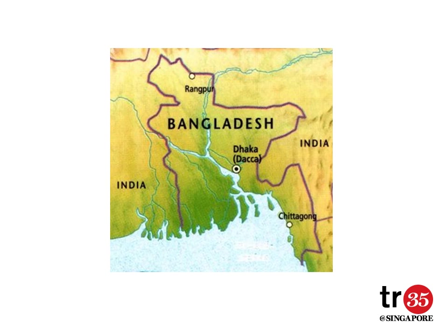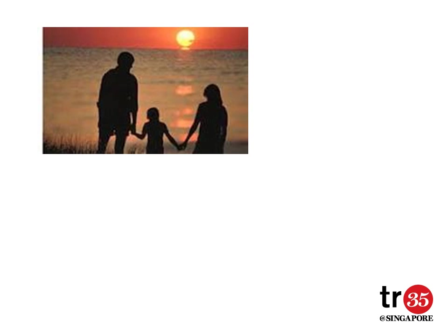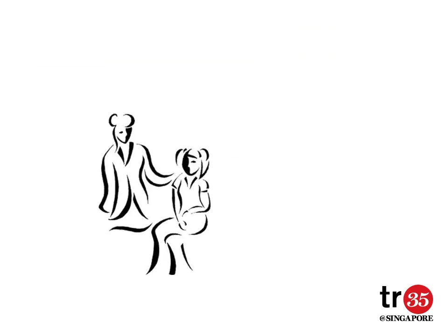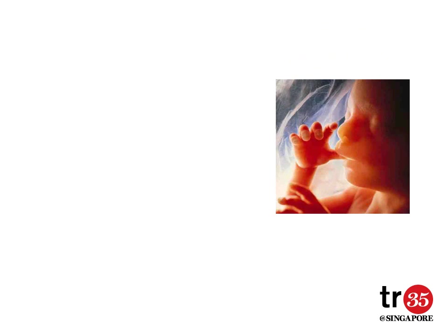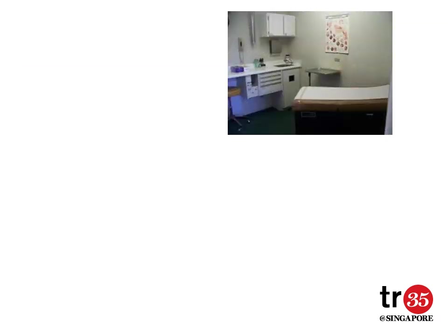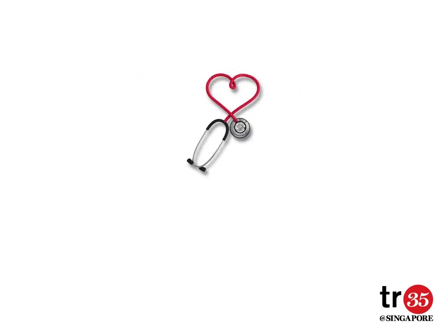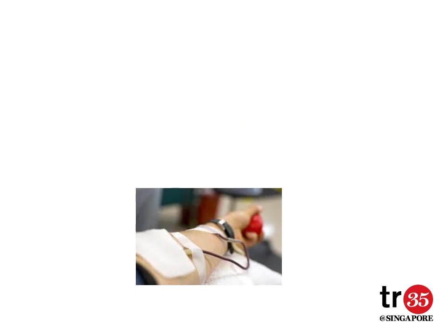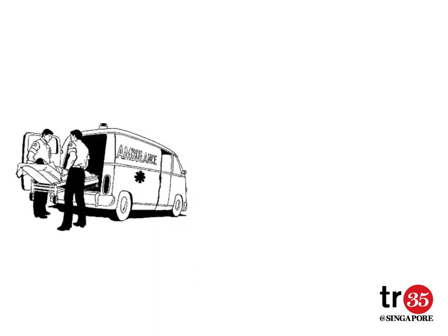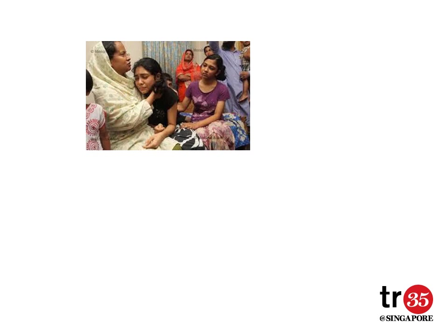One of my distant female relatives lived in the remote part of Dhaka. She was educated and living happily with her husband and a daughter. They were expecting another baby. At the time of labor, she went to a nearby clinic, which had limited facilities. She gave birth to a baby girl. But unfortunately, her situation got complicated after the delivery and the duty doctor suggested immediate blood transfusion. The clinic had neither a blood bank nor a pathological lab for blood typing. And although there were volunteers available to donate blood, none of her family members could confirm her blood type. And sadly, she later died en route to a larger hospital in Dhaka.